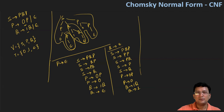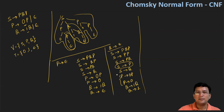But we still have some unit productions — for example, S produces P. We will remove those too. To remove S produces P, whatever P generates, we write all those productions in place of S produces P.